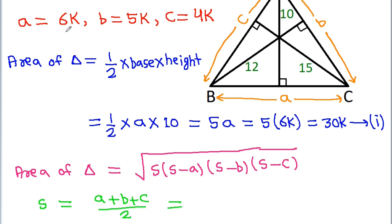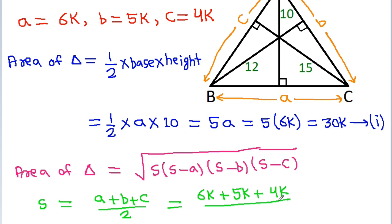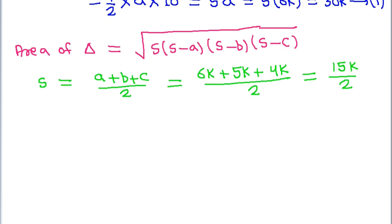We have A equal to 6k, B equal to 5k, and C equal to 4k. So S will be (6k plus 5k plus 4k) divided by 2, and we get S is equal to 15k divided by 2.